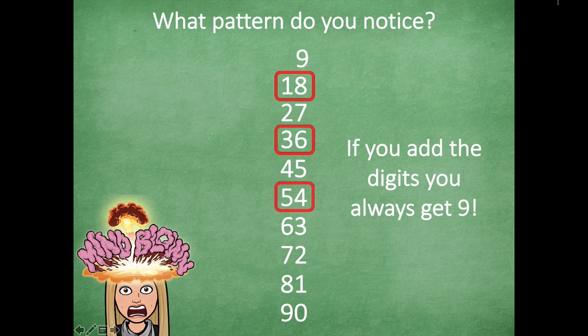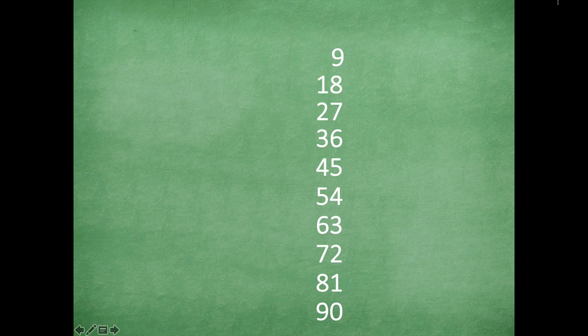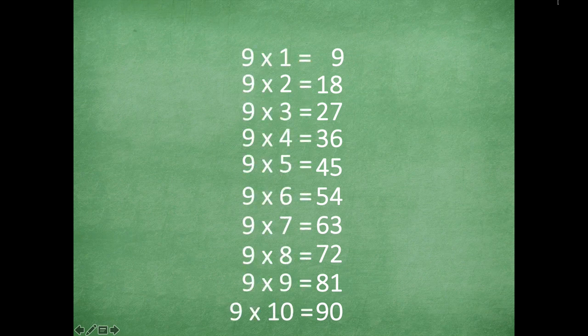Let's verify: fifty-four — five plus four equals nine, yes! Seven plus two — absolutely, seven plus two equals nine. Nine plus zero — does that equal nine? Yes it sure does, that's an easy one!